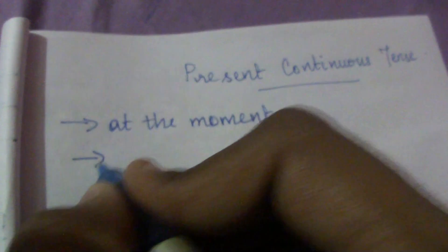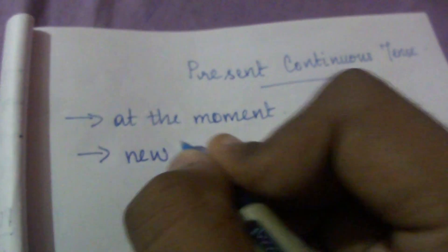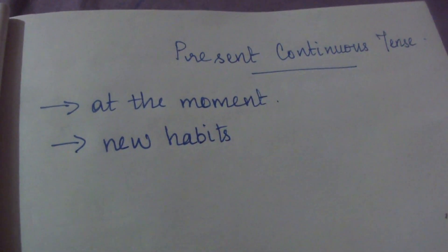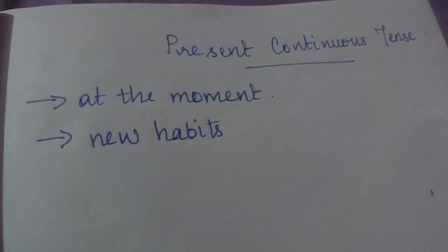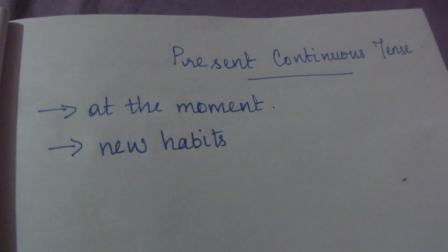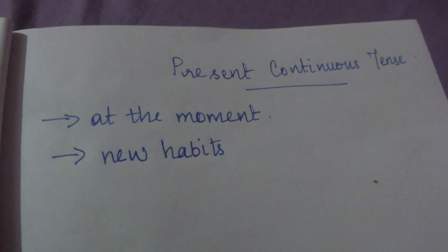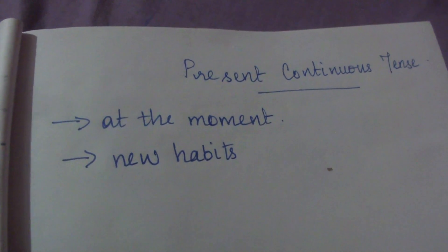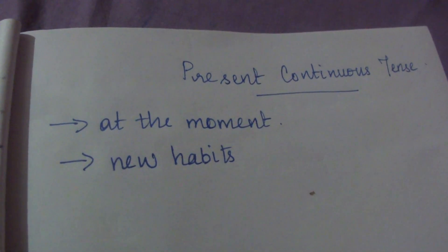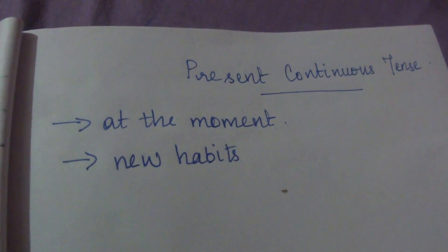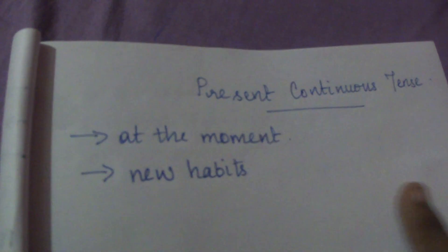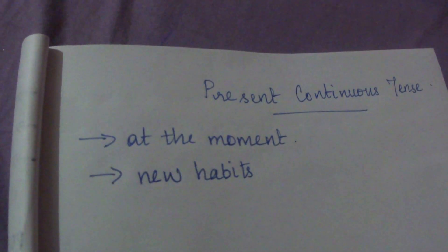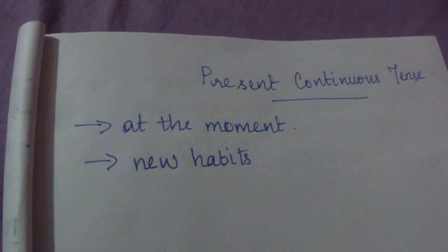For that we use at the moment and we use present continuous for the new habits which have been developed like in these days. For example, let us assume a boy known as Raju who never eats food at all but nowadays he eats food much. So we can say Raju is eating a lot of food nowadays. That's a new habit which has been developed. New habits which are developed can be denoted in present continuous tense.